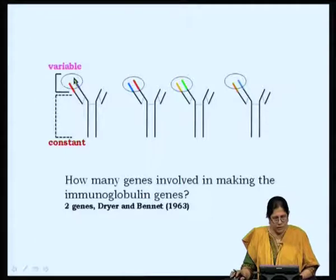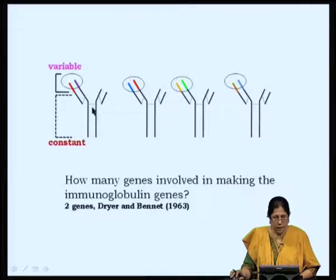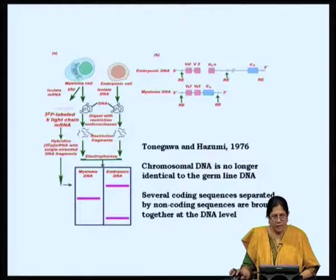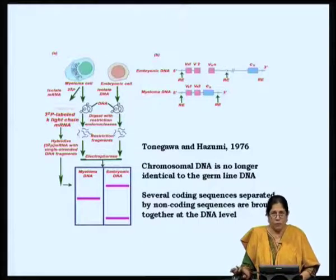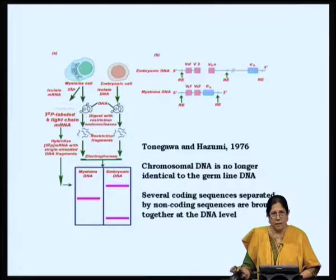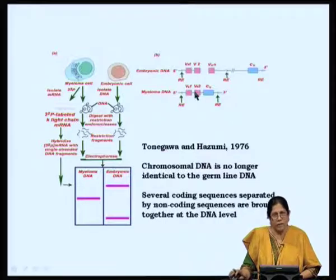Several immunoglobulin molecules are identical in their heavy and light chains: two-thirds of the molecule is identical, shown in black, and variability lies only at the amino terminus. Both heavy and light chains have variable domains. Though Dreyer and Bennett proposed in 1963 that there could be two gene segments, we now know that gene segments code for the entire immunoglobulin molecule. In 1976, Tonegawa and Hazumi did very elegant experiments demonstrating that there are different gene segments at the DNA level and reorganization of immunoglobulin genes at the DNA level itself.